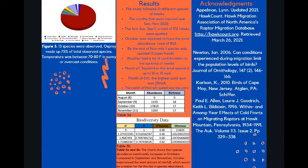The results that we found throughout our process was we followed behind 21 different species of hawks. The month that was reported was September through November 2020. The first day was September the 1st, and a total of 172 hawks were spotted. That hawk was the Cooper hawk.